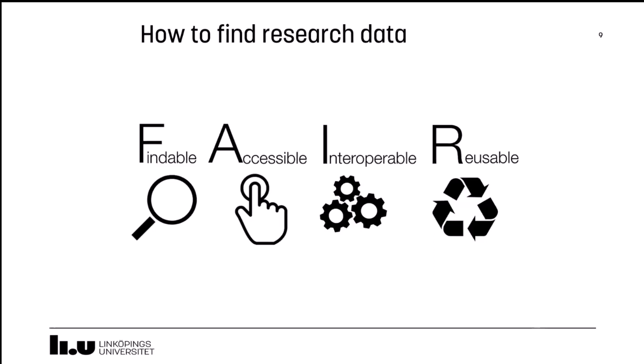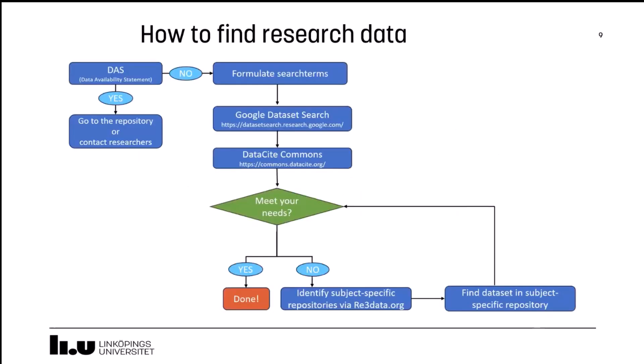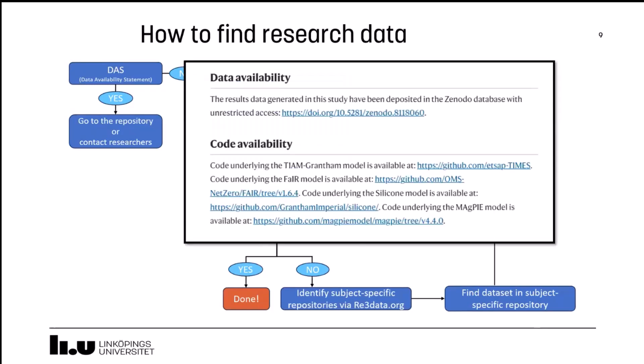Here is a flowchart that shows how to find research data. The first step is to check if the relevant paper has a data availability statement. The data availability statement shows where the data is available. Here is an example of a data availability statement from a paper in Nature Communications. It may look a little different depending on the journal, but in this case there is both a data availability and a code availability section. You can just click the link and go to the repository and download the data.